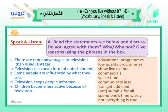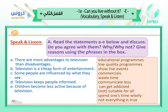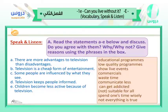Read the statements A to E and we are going to discuss whether we agree with them or not, then give reasons using the phrases in the box. The statements are: A — there are more advantages to television than disadvantages; B — television is a cheap form of entertainment; C — some people aren't influenced by what they see; D — television keeps people informed; E — children become less active because of television. In my opinion, televisions do have a lot of advantages — many educational programs, live events, and the news close to you.